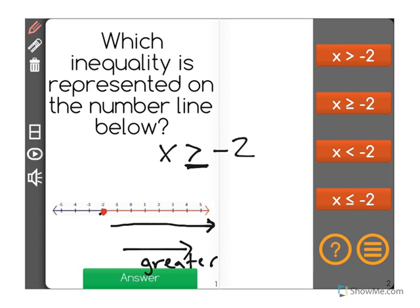If we were to have an open circle, and then a line from negative 2, that would signify that negative 2 is not a possible answer, and that x is only greater than negative 2.